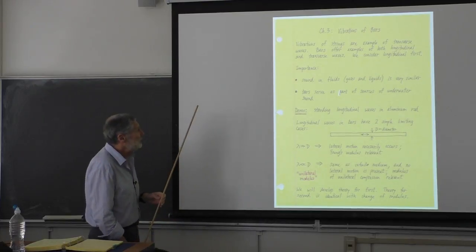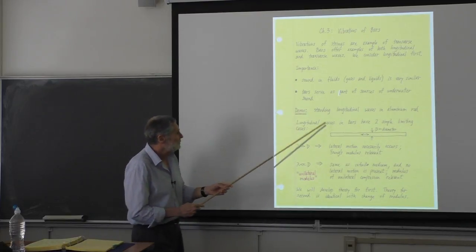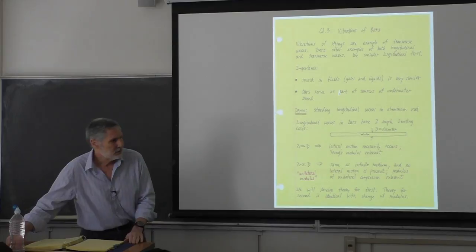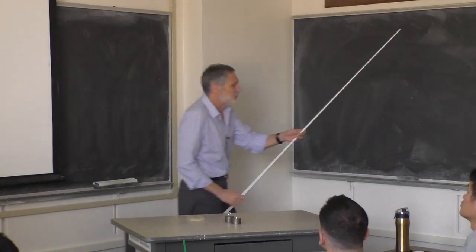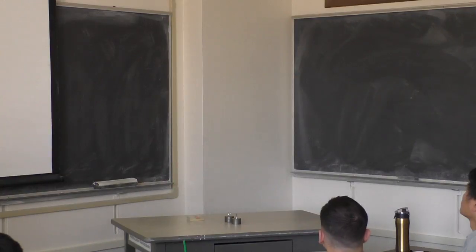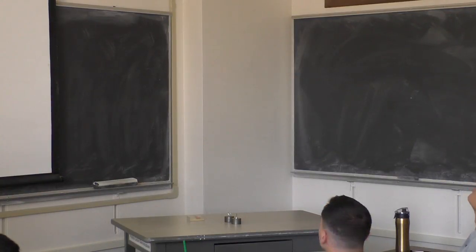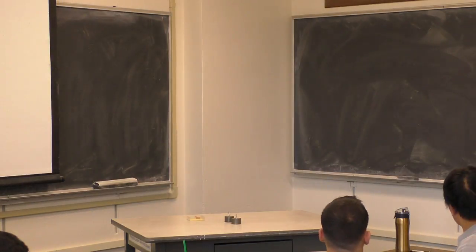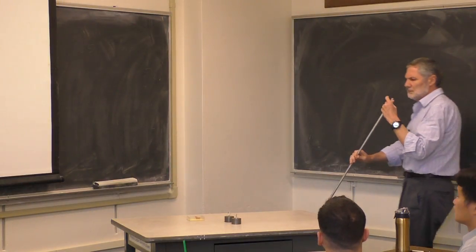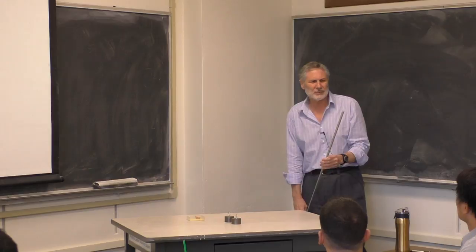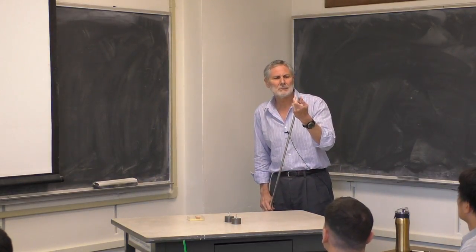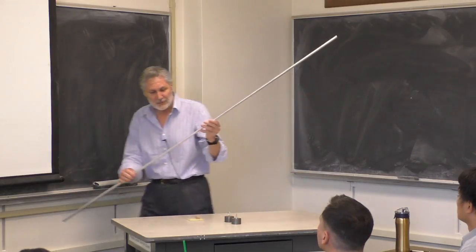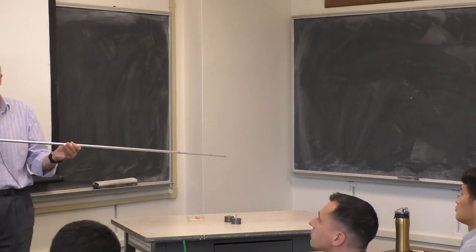For half of the chapter we're going to deal with longitudinal waves. Here's a demonstration — this is just an aluminum rod, six feet by roughly a half an inch in diameter. It's been scribed here; it's been turned on a lathe. Those are particular marks that I'll explain. The first one is right in the center.